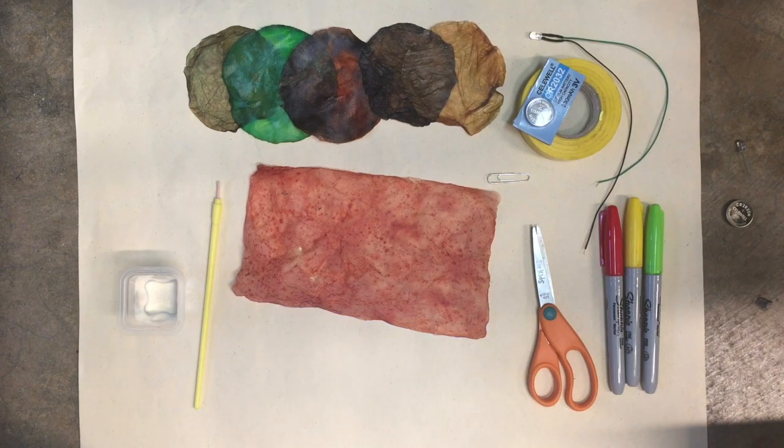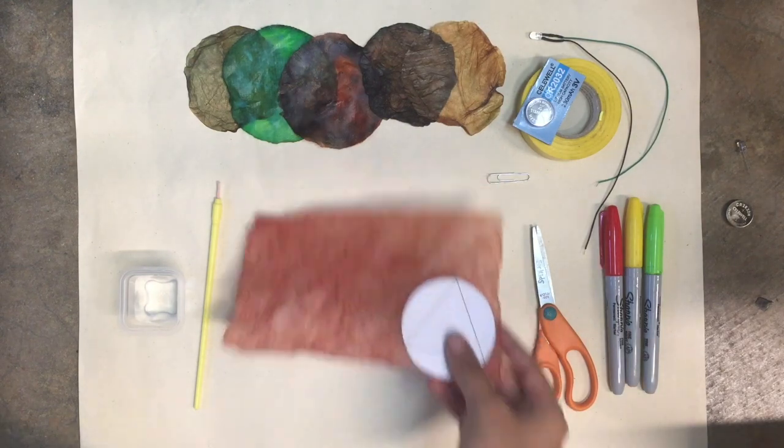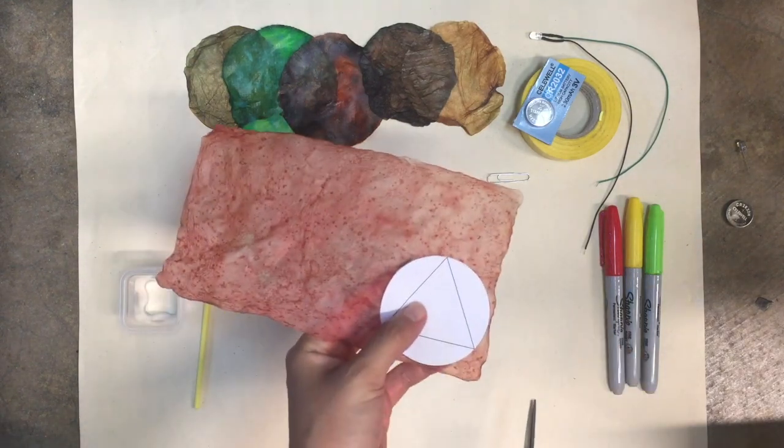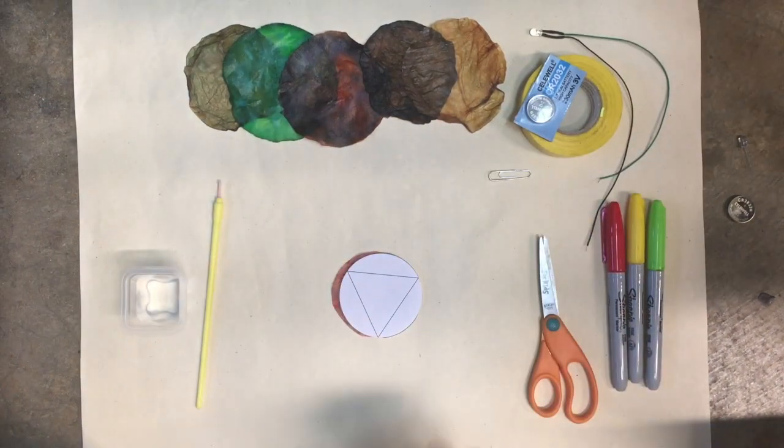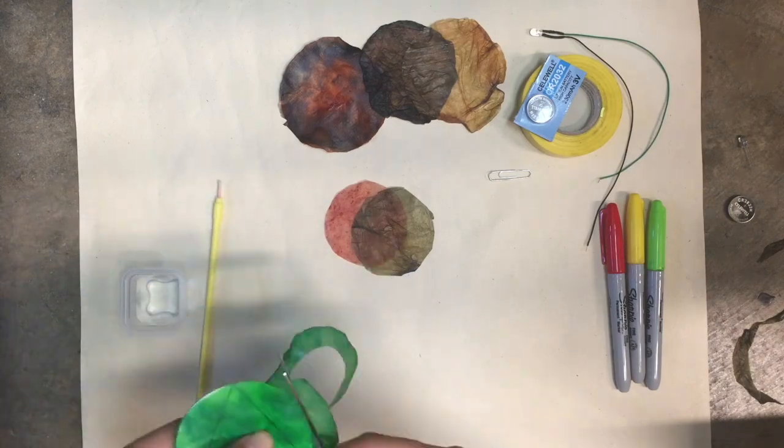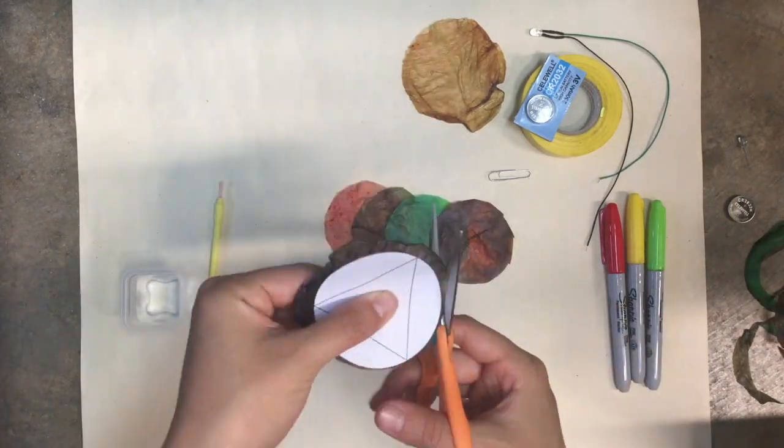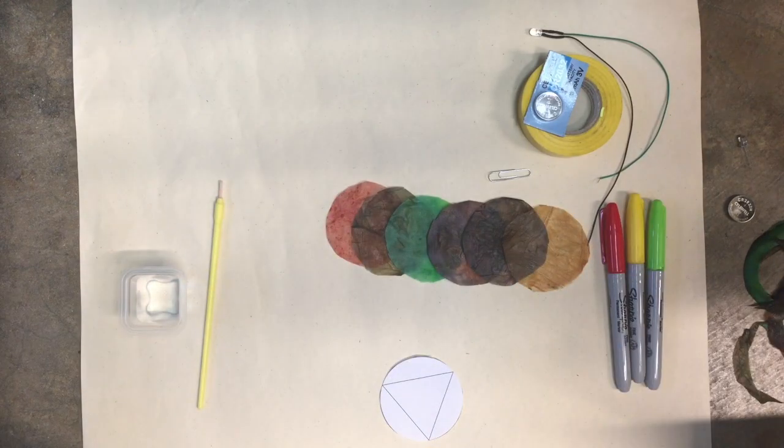You're only going to need one circle from the template so you can just cut around one of the circles and you can use this to cut out circles from large pieces of kombucha leather. If you're using kombucha leather that has been grown in a petri dish or a mason jar you don't have to cut them since they're already circles, but you can if you just want them to all be the same size which is what I did.